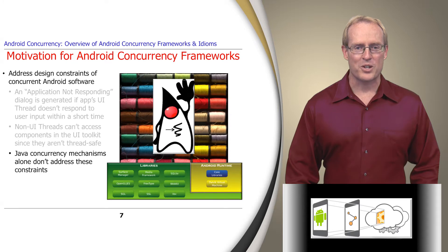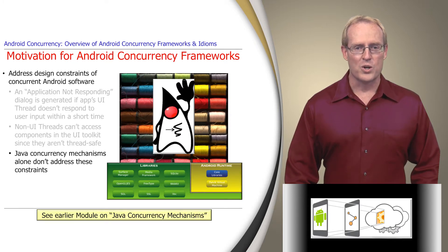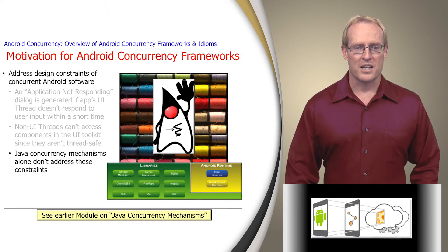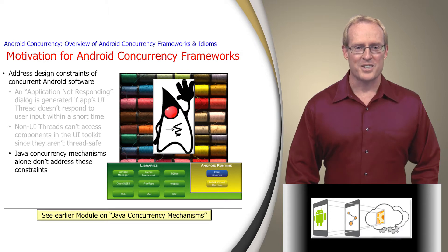Although the Java concurrency mechanisms covered in the previous module are useful for starting, synchronizing, scheduling, and terminating threads, they're intended for general-purpose concurrency environments. Hence the need for frameworks that shield developers of multi-threaded Android software from these tedious and error-prone aspects of its design constraints.